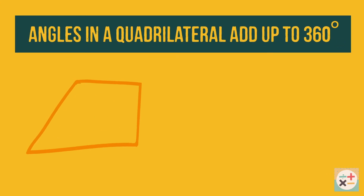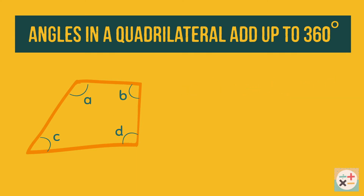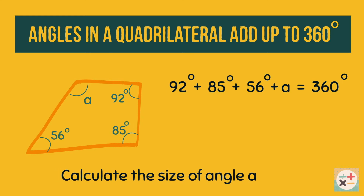Another rule is that angles in a quadrilateral, a shape with four sides, add up to 360 degrees. We can see this is true because we can divide the shape into two triangles. Let's solve this question by using this rule. Again we can rearrange the equation to find the angle.